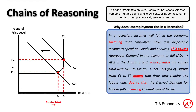This fall of output from Y1 to Y2 means that firms now require less labour and, due to this, the derived demand for labour falls, causing unemployment to rise. You can see I've used six connectives in a fairly short paragraph and a diagram to form a chain of reasoning explaining why unemployment rises in a recession.